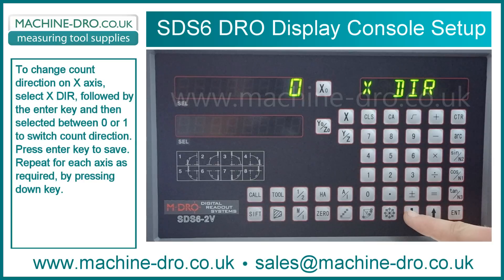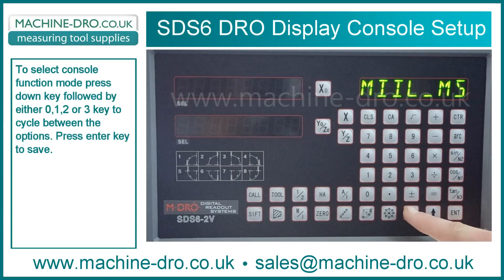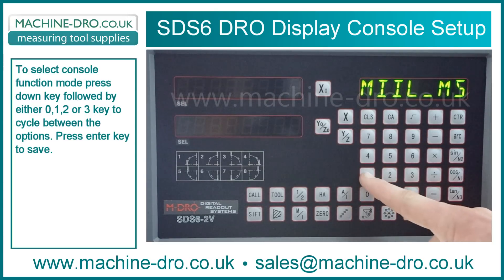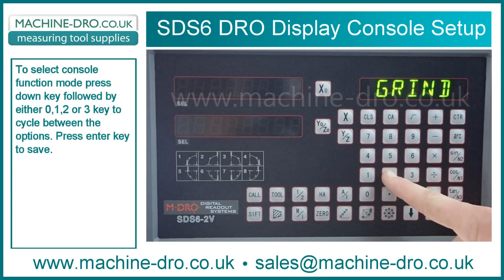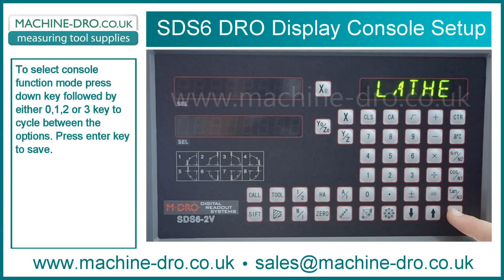Repeat for each axis as required by pressing the down key. To select the console function mode, press the down key followed by either 0, 1, 2, or 3 to cycle between the options. Press the Enter key to save.